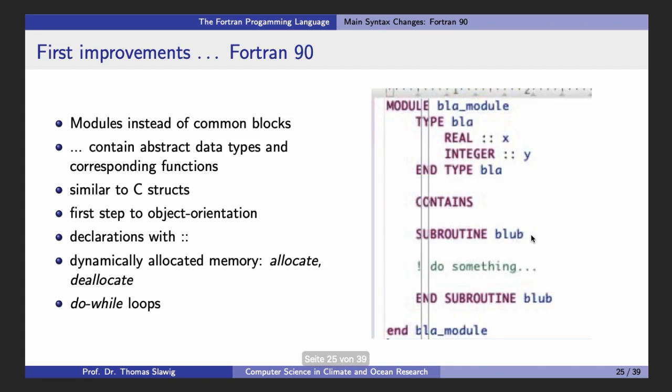In FORTRAN 90 there were some changes and there were modules. These replaced common blocks. In a module you can define a derived type, similar to a struct in C. You can also define subroutines after this contains statement, and this goes in the direction of classes because you have here data and you have the operations. This was a prototype for then in FORTRAN later versions to include definition of classes. There were also some differences in the declaration with this double colon. There was also dynamically allocated memory and do-while loops were introduced. The do loops which up to then were just for loops with a counter, they were extended to do-while loops.